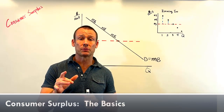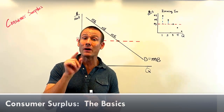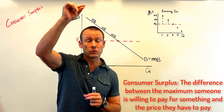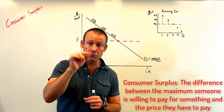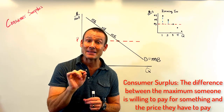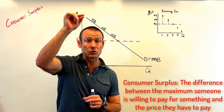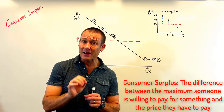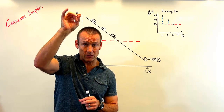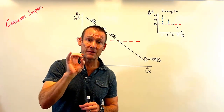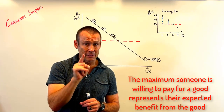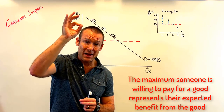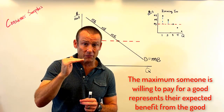In this video we're talking about consumer surplus, and it is easy. Consumer surplus is the difference between the maximum a consumer is willing to pay for a good and the price they have to pay. The maximum a consumer is willing to pay for a good represents the benefit that good is going to provide them.